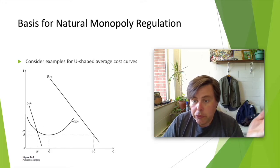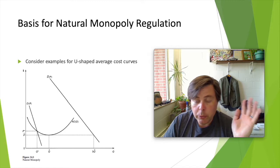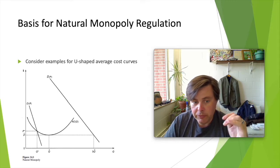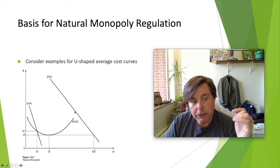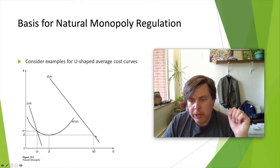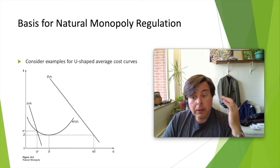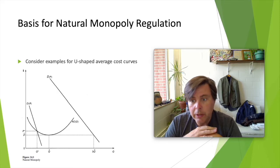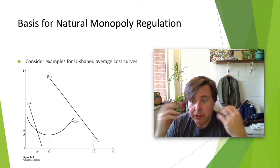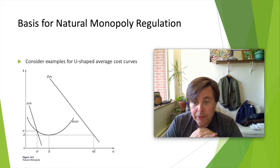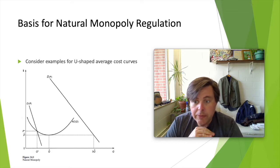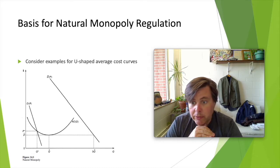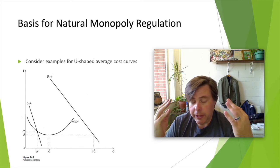Now let us say that the town grows, and as a consequence, the demand for fuel — auto fuel, gasoline — increases significantly. Maybe we have a situation where demand shifts to D bar. Market demand is now 3Q. What this implies is that our market has grown big enough that we can effectively sustain three gas stations, and they can supply efficiently and hopefully compete with each other to bring prices to P hat. So what was formerly a natural monopoly due to expansion in the market becomes no longer a natural monopoly.